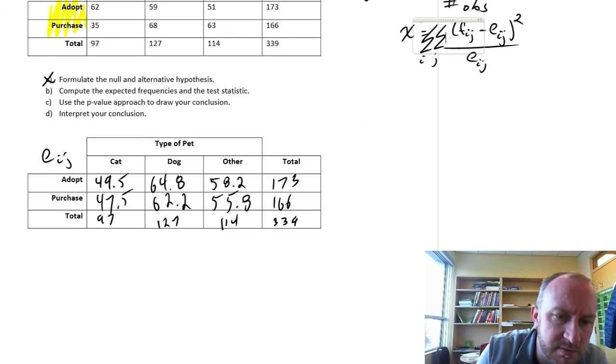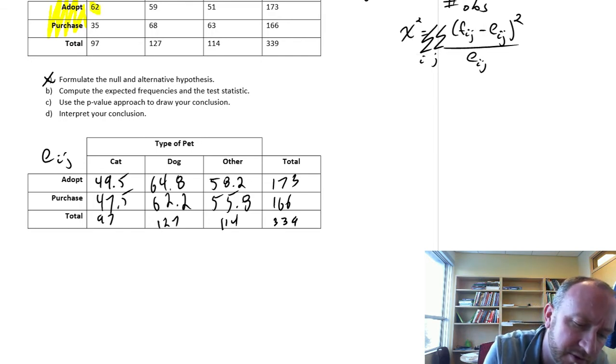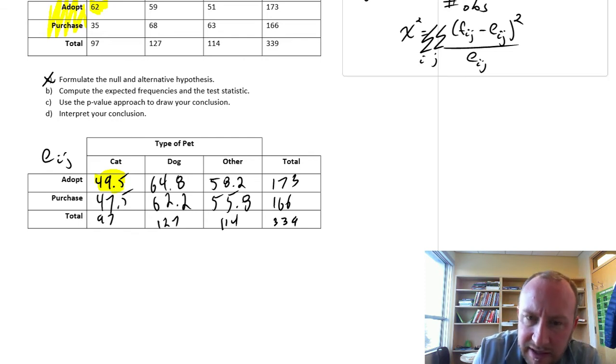So I'm going to just scroll down a little bit. So the first one that we'll do, we'll look at the cats. So here's our observed, here's our predicted, and so we need to look at that difference.